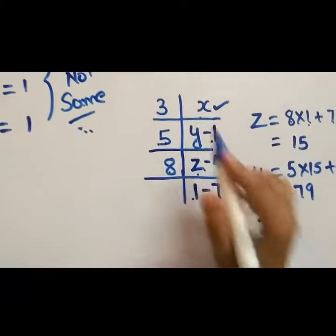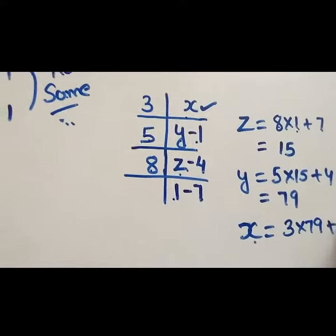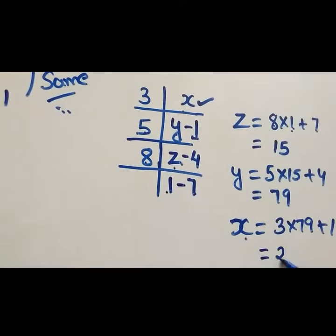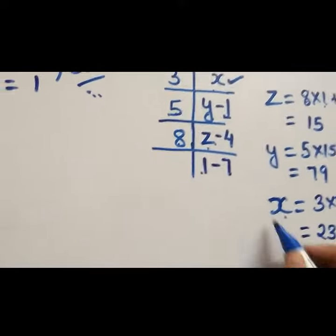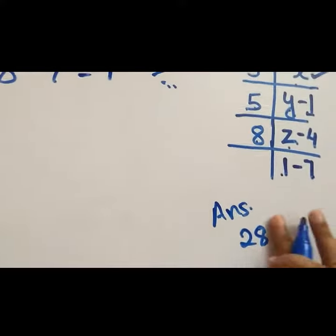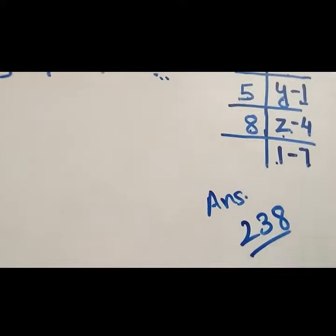So x will be what? 3 into Y, that is 3 into 79 plus 1, which comes out to be 238. So our answer is 238.